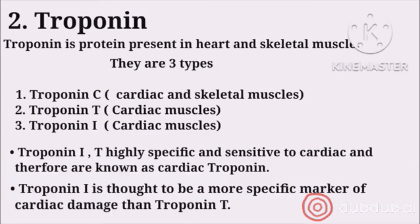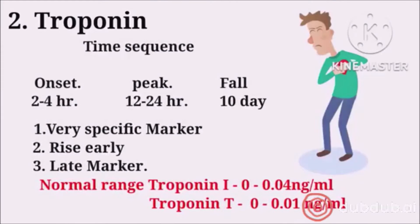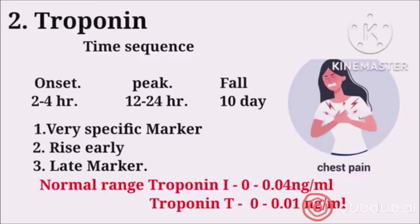Troponin I is used more because it is more specific than troponin T. Whenever a patient gets a heart attack or there is any damage to the heart muscles, within 2 to 4 hours troponin is released in the blood, and within 12 to 24 hours its level peaks. It remains in the blood for about 10 days. So if a patient comes and says he had chest pain 4 to 5 days ago, you can test troponin to find out whether a heart attack occurred, since troponin remains present for up to 10 days.